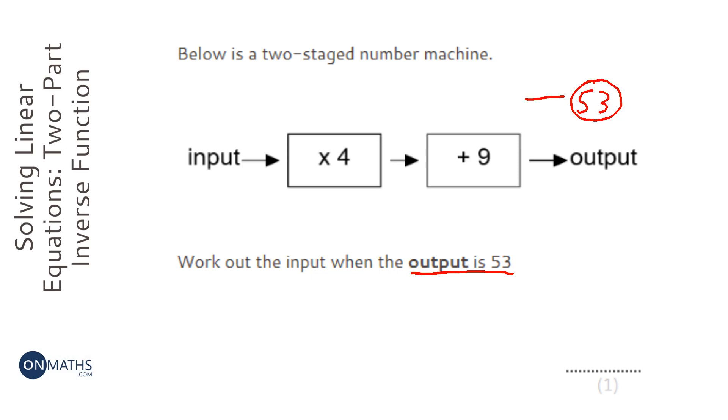So when you're going the wrong way through a number machine, you inverse the operation. So instead of plus 9, we do the opposite of that, which is minus 9. And instead of times by 4, we divide by 4.